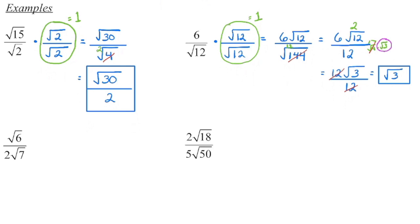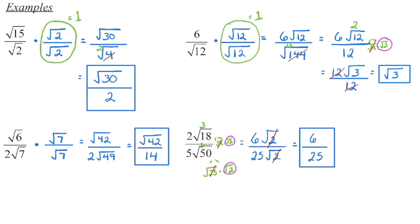You may have noticed you could also reduce those coefficients before simplifying the radicand. With division, the order of steps doesn't necessarily matter because everything will simplify down at the end — you just want to make sure that in the end you are fully simplified.